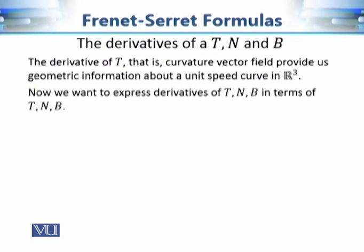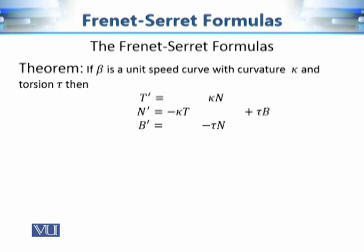So far we have calculated the derivative of only the tangent vector field, and using this we were able to extract one important feature of any given curve in R3 — the curvature of that curve. Now, motivated by this, we want to calculate the derivatives of the remaining two vector fields: the normal vector field and the binormal vector field. These derivatives are known as the Frenet-Serret formulas.